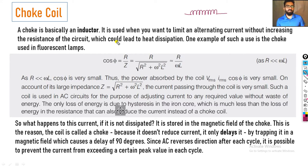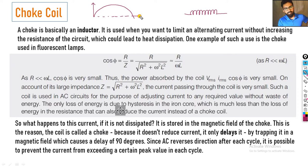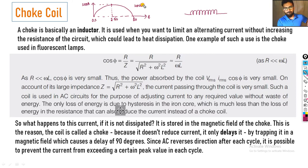मैं एक छोटे से example लेकर समझाता हूं। Let us say circuit में inductor नहीं है। तो वो जो current है, for example, 0 से — let us say, ये 0 seconds है, ये 5 seconds है — this is time. Current का value 0 से increase होगा। अगर inductor नहीं है तो let us say 100 ampere तक पहुंच जाता है — let us say this is 2.5 seconds. This is without inductor. 0 से लेके 2.5 seconds तक current का value 0 से grow करके 100 ampere तक पहुंचेगा।